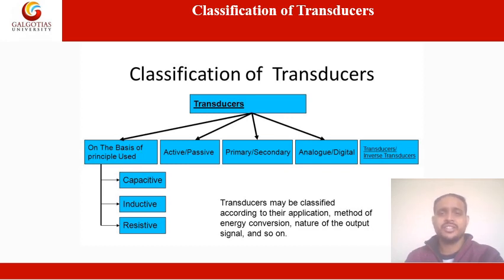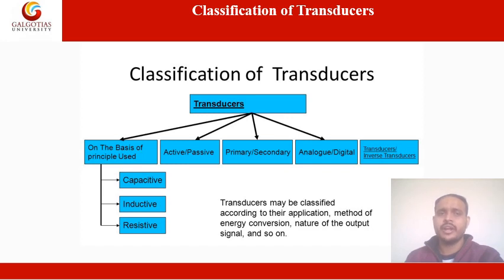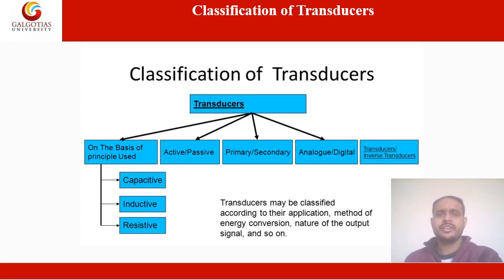One broad classification is based on energy consideration, where transducers are classified as active and passive. A passive transducer is one whose output energy is supplied entirely by its input signal — it derives the power required for transduction from an auxiliary source and does not have its own power source. Active transducers do not require an auxiliary power source; they are self-generating type, producing their own voltage or current output. Passive transducers have electrical parameters such as resistance and capacitance.